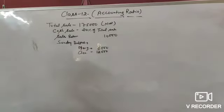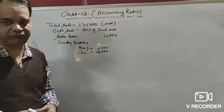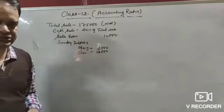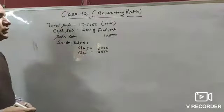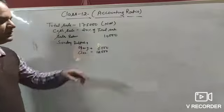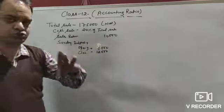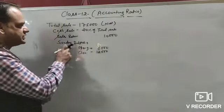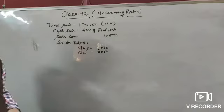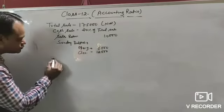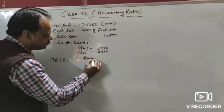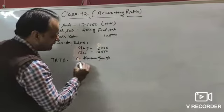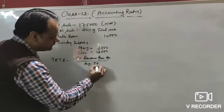Now illustration number 83. In this illustration, total sale ₹1,75,000 (net amount, sales return already deducted), cash sale is 20% of total sale, sales return ₹10,000 (net value given). Sundry debtors: opening ₹8,000, closing ₹12,000. We have to find the trade receivable turnover ratio. Formula: credit revenue from operation divided by average trade receivable.